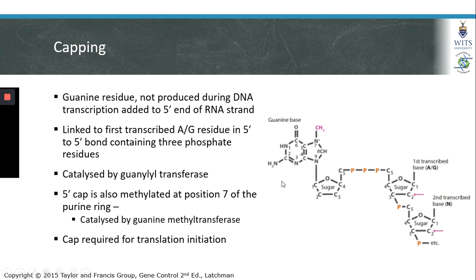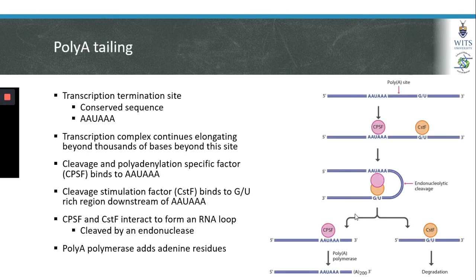The 5' cap is important because ribosomes are able to recognize and bind to the 5' cap in order to promote translation of the RNA into protein. In addition to the 5' cap added to the start of the mRNA strand, the end of the mRNA strand is polyadenylated, and we call this process poly-A tailing.